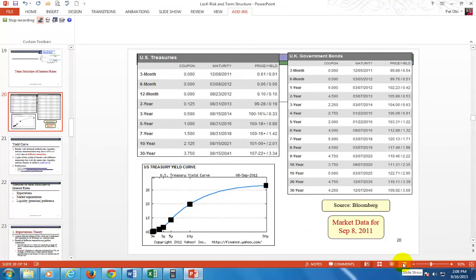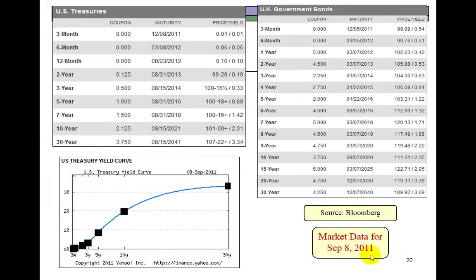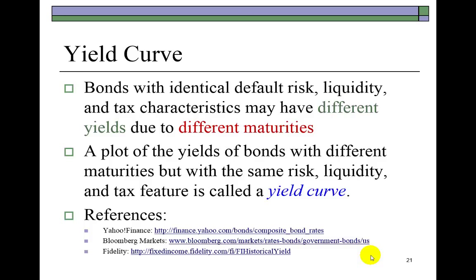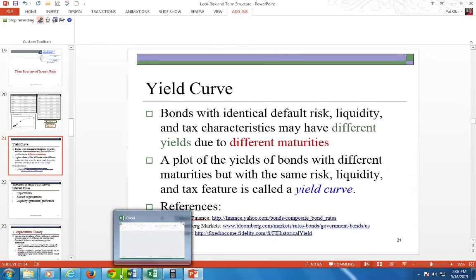Going back to the presentation: what the yield curve — the pictorial rendering of the term structure of interest rates — tells us is the difference in the yields of bonds with different maturities, having isolated their default risk, liquidity, and tax characteristics. You can go to the web and check out the current yield curve at a couple of websites I've provided here.